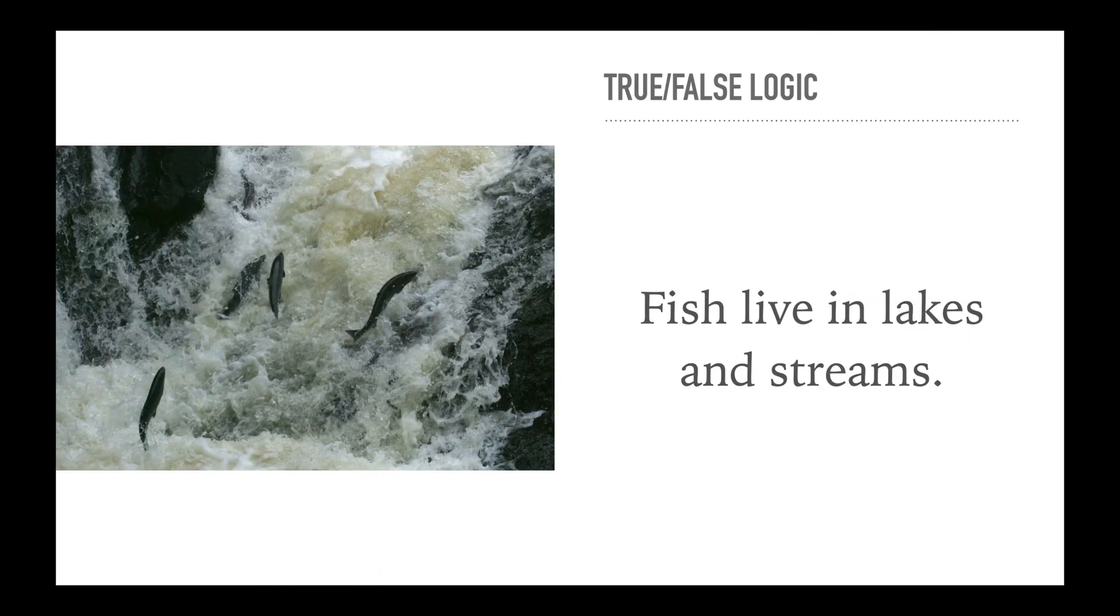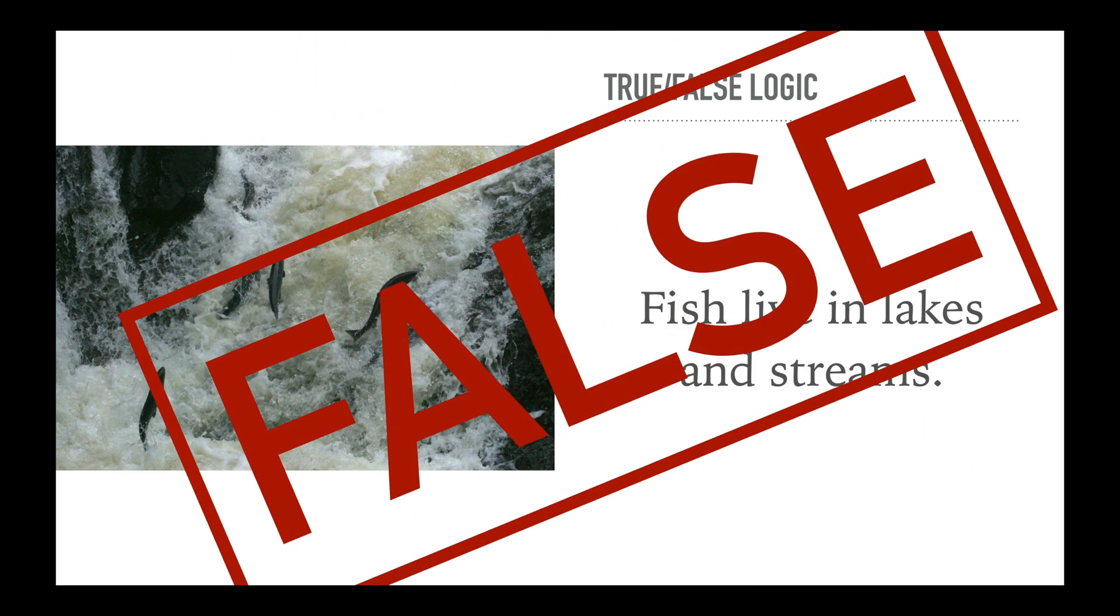Next, fish live in lakes and streams. If we look here, we see some beautiful fish in a stream going upstream against the flow. And as we all know, this answer has to be false because there are fish that live in other areas, such as the ocean, like Nemo and so many others.